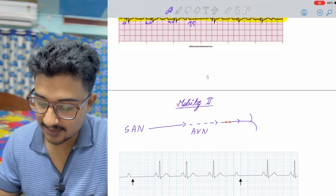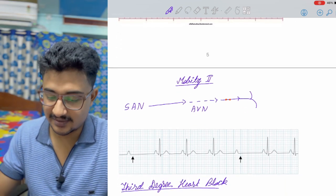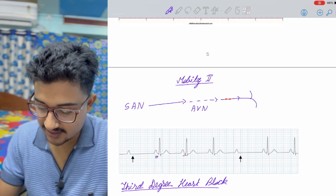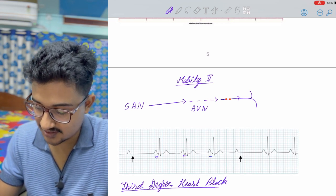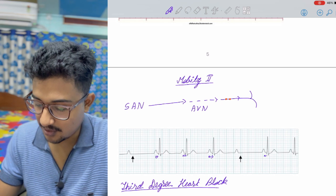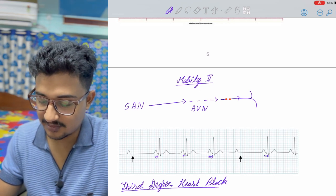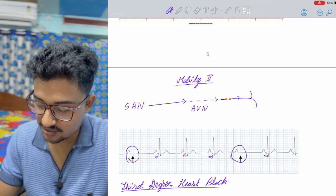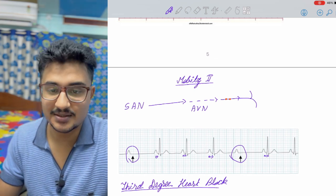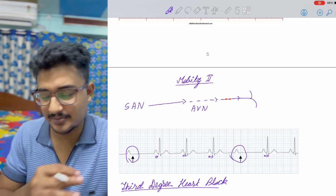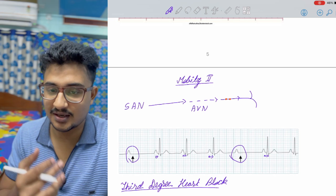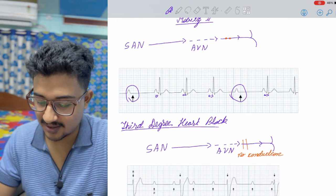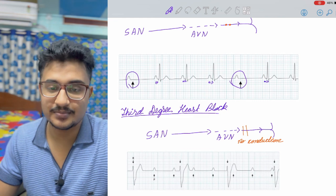In Mobitz II, the pathology lies after the AV node. In some cases, if you check the PR interval, there is missed beat. Check the PR interval just before, all are the same. Only one or two cases, there are missed beats. But previous to the missed beat and after the missed beat, the PR interval is same. In all the cases, the PR interval is the same. This is a case of Mobitz II, second degree heart block.